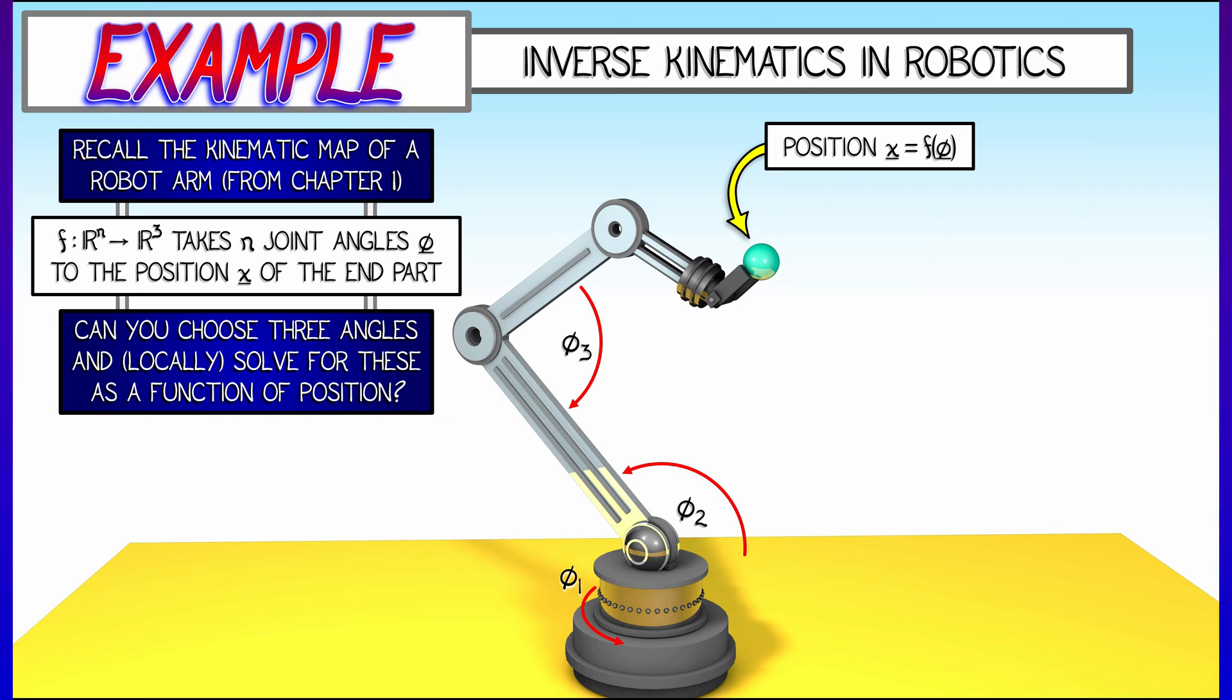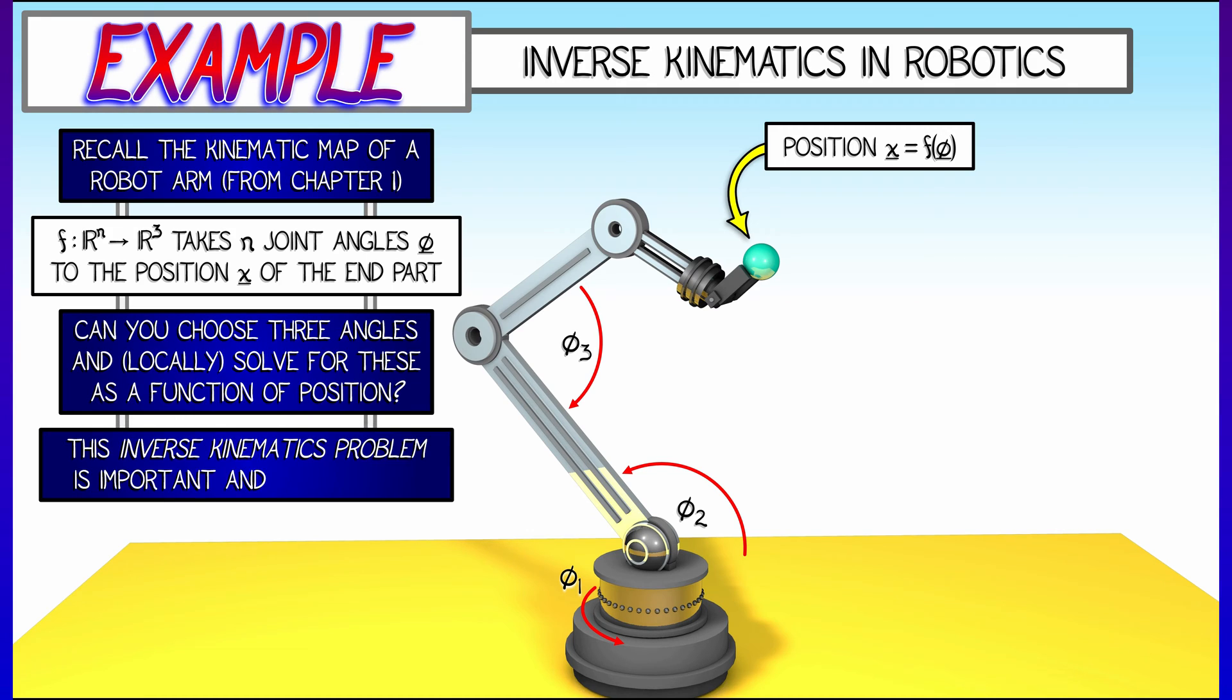So I want to put the ball right here. What do I need to set the angles at? This is called the inverse kinematics problem, and it's not so easy to solve. It's not obvious.